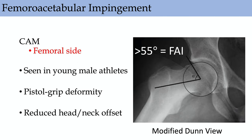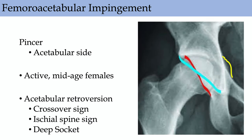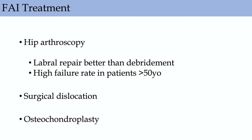Femoral acetabular impingement: you can see CAM or pincer types. Pincer is on the acetabular side — typical in active middle-aged females. Signs include the ischial spine sign indicating acetabular retroversion, crossover sign, or deep acetabular socket. Treatment can be arthroscopy or non-operative. Labral repair is better than debridement. There's also osteochondroplasty to remove the bump at the femoral head-neck junction, and surgical dislocation is an option. Predominantly, treatment is non-operative physical therapy.